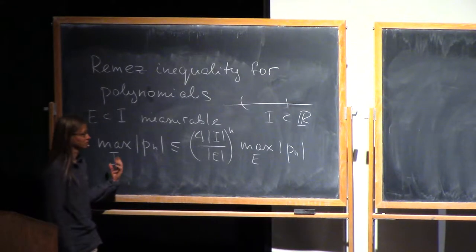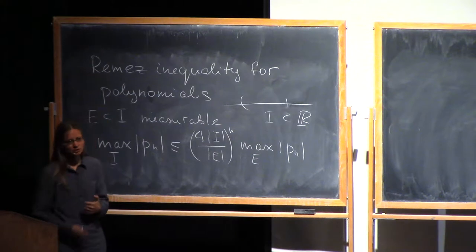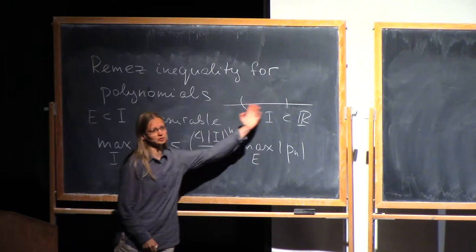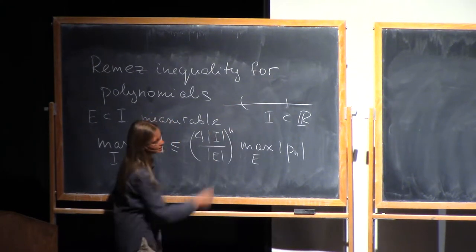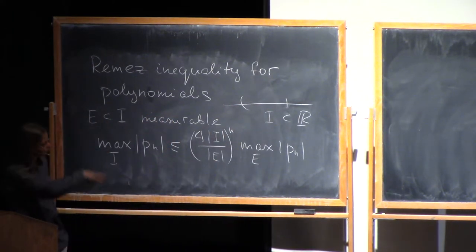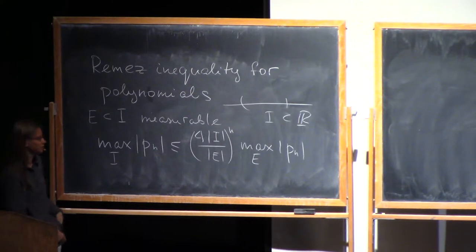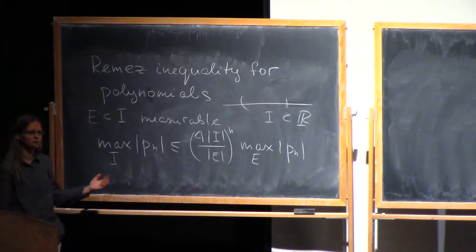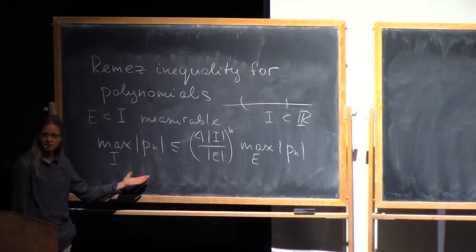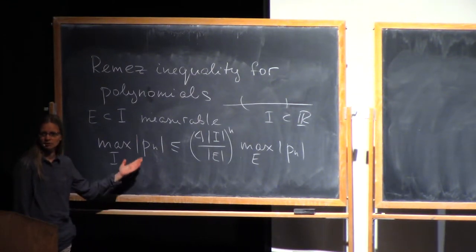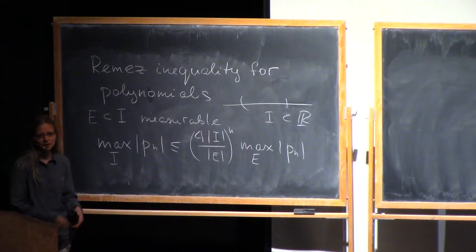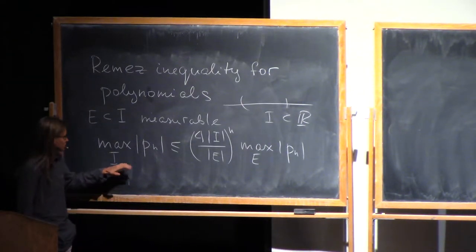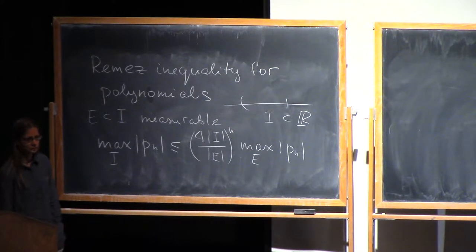Basically, the truth is that Chebyshev polynomials are extremal here. So you have to look at the Chebyshev polynomial on, say, minus 1 to 1, see how fast it grows from this interval, and it will give you the right estimate. If you are following the problem sessions, you will be guided through the proof of this estimate in one of the problems, because it's a very elementary thing to prove. So this is Remez's inequality for polynomials of degree N.